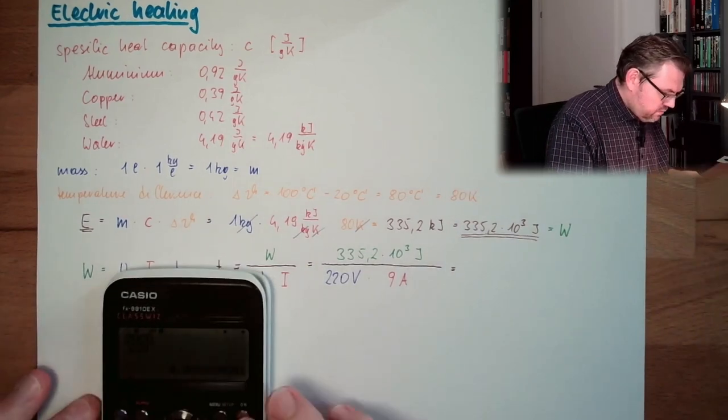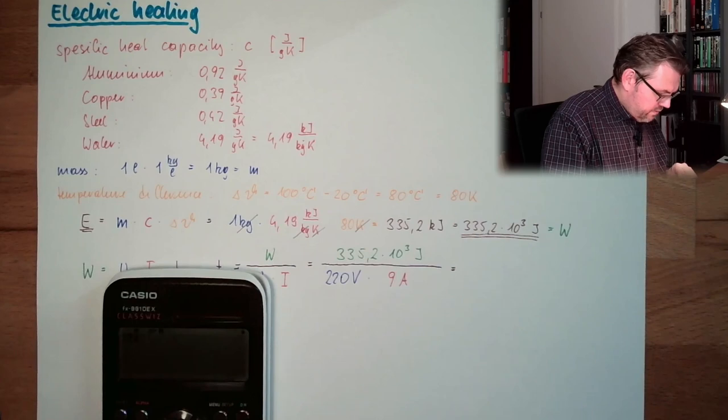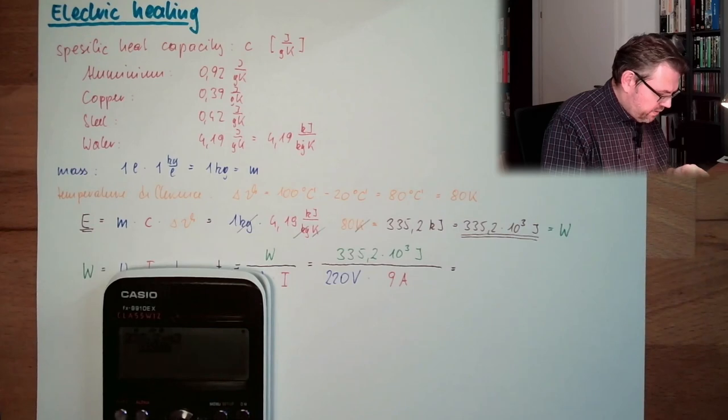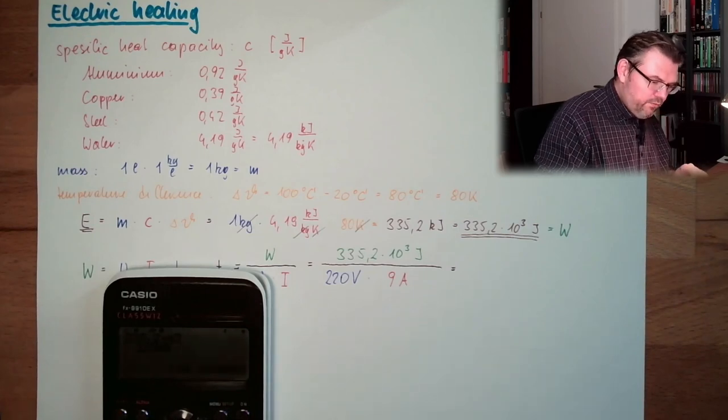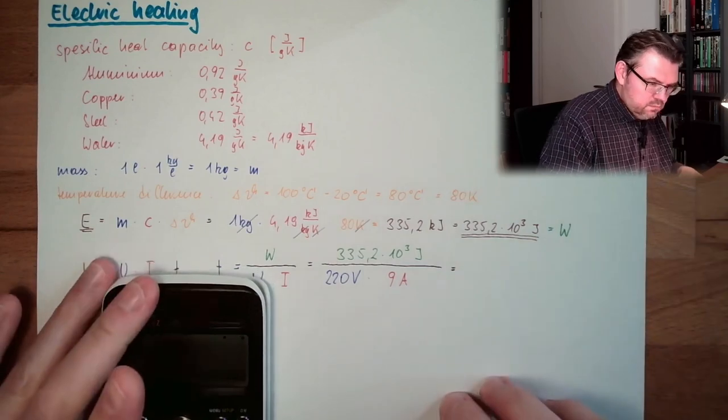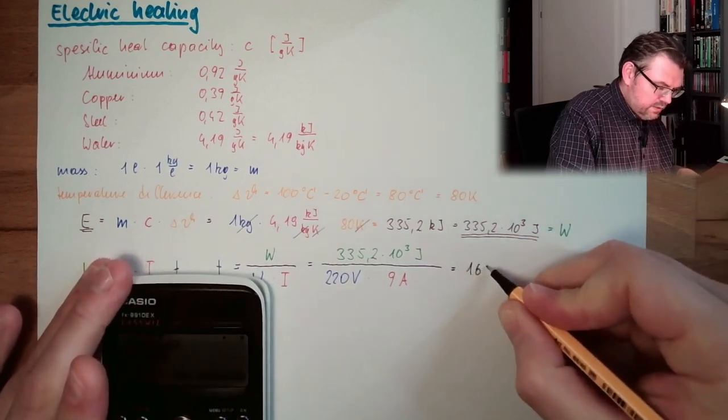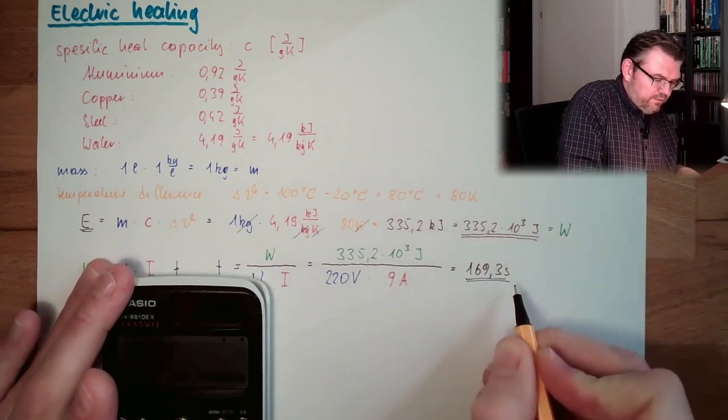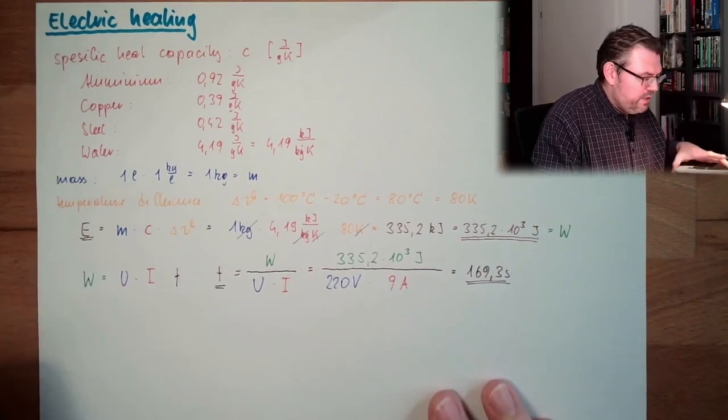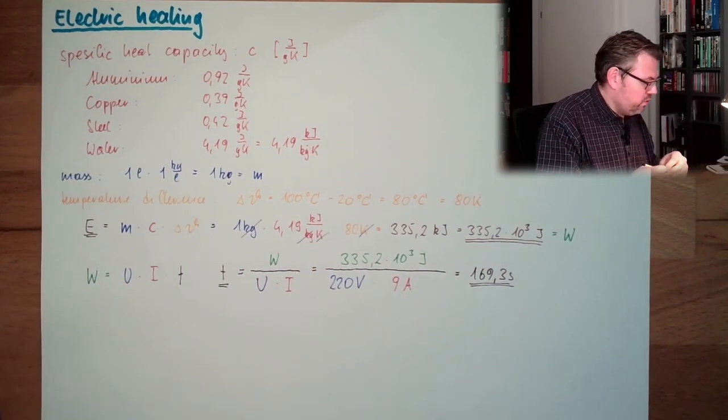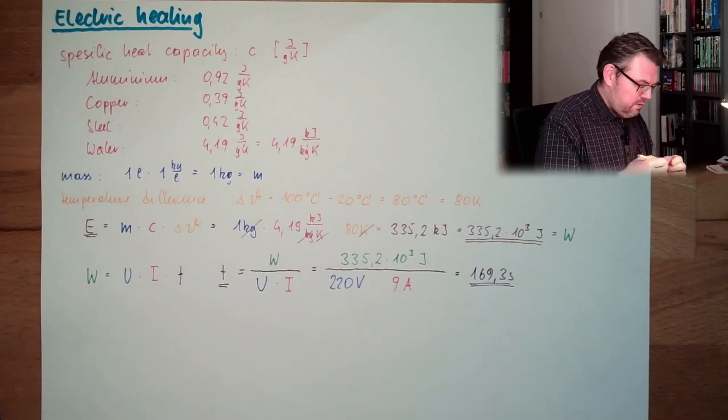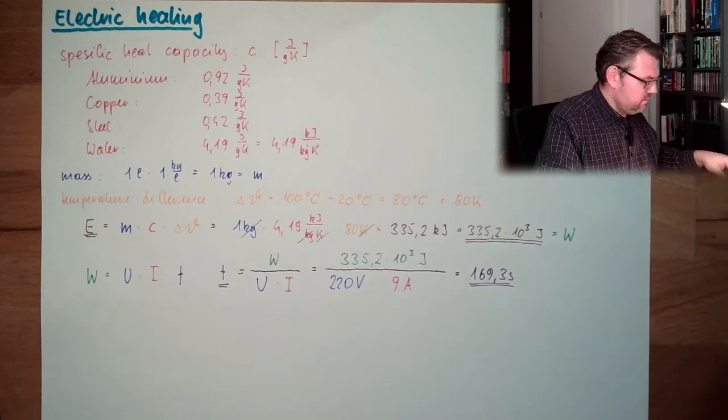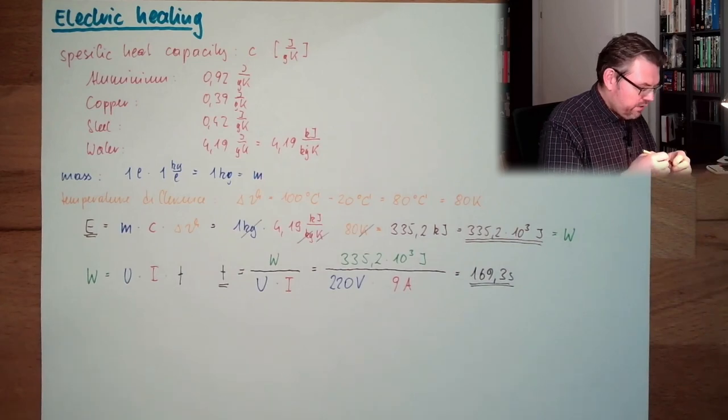So, let's see how long it should take us. Calculator. 335.2 times 10 to the power of 3, divided by 220, multiplied by 9, is 169.3 seconds. This is the amount of time we would expect that we need to heat up our water. At least according to the mark. And now we do the experiment.